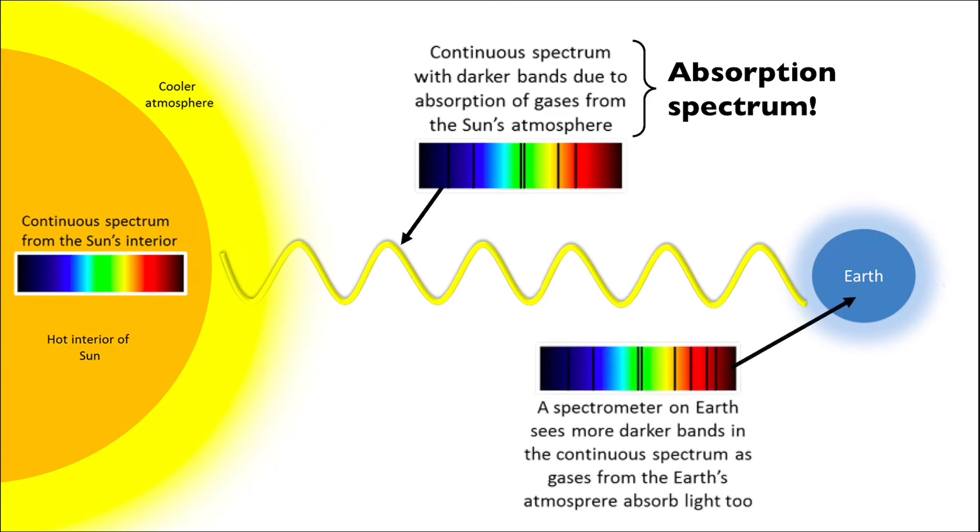When we finally get to analyze that light here on Earth, Earth's own atmosphere also adds several more of these darker bands on the incoming absorption spectrum from that star.